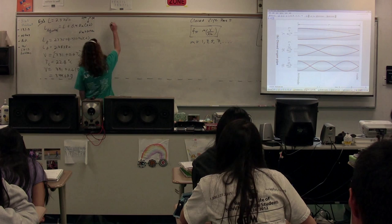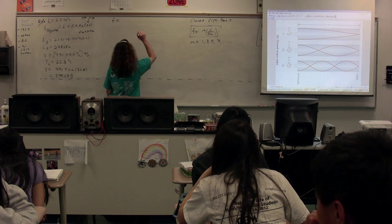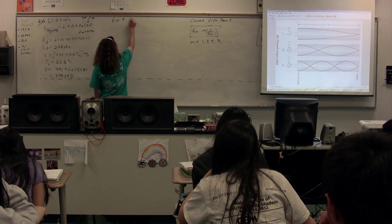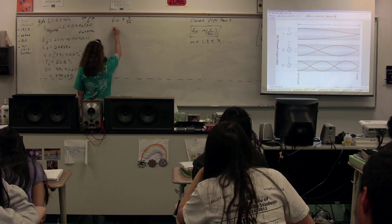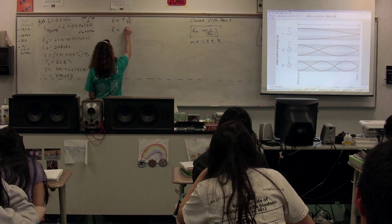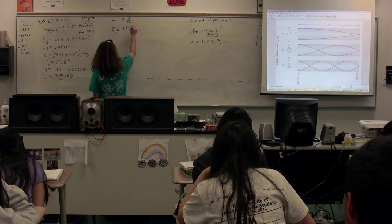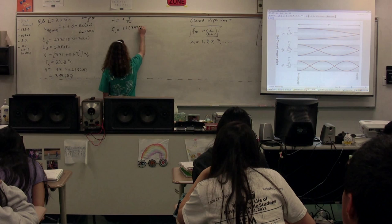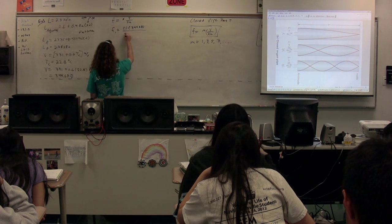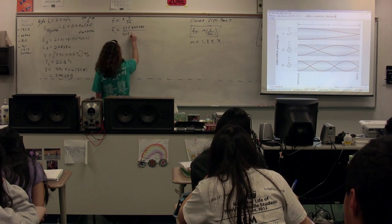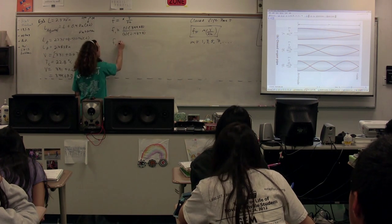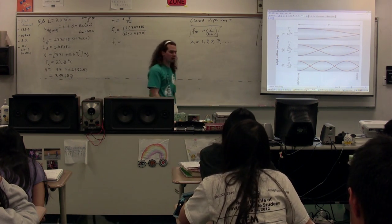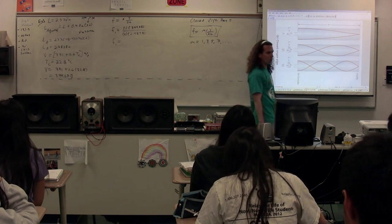So now we're going to use the equation for an open pipe instrument, which was frequency equals n, the harmonic number, times the velocity, the speed of sound, divided by 2L. The first harmonic is going to be 1 times the speed of sound, which we just figured out, 344.68, divided by 2 times the length, which we just got, 2.4838. The first harmonic, or the fundamental frequency for this tube, this open pipe instrument.